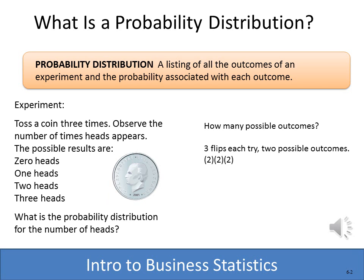A probability distribution is all of the outcomes that are possible from an experiment listed out. For example, if we were to toss a coin three times, that would be the experiment. There are eight different possible outcomes. The first time I flip the coin there are two possible outcomes, the second time two possible outcomes, the third time two possible outcomes. So in all we have a total of eight possible outcomes, and the probability distribution is a listing of all eight possible outcomes of this experiment.